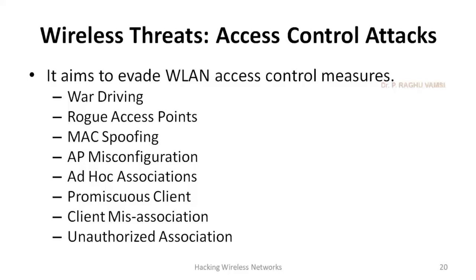The first threat is access control attacks. Basically, any encryption standard or any security method will be designed to safeguard the CIA triangle — that is, confidentiality, integrity, and authentication. We will see one by one what are the possible attacks on confidentiality, integrity, and authentication. Wireless threats include access control attacks, which aim to avoid the wireless LAN access control measures.